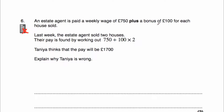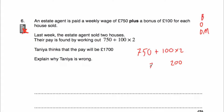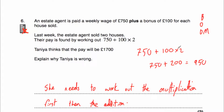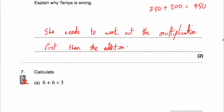Question 6: an estate agent is paid a weekly wage of £750 plus a bonus of £100 for each house sold. Last week the agent sold two houses, so pay is 750 plus 100 multiplied by 2. Tanya thinks the pay is £1700 — explain why she's wrong. We must do the multiplication first: 100 times 2 is 200. Then 750 plus 200 is £950. Tanya did 750 plus 100 first (850) then multiplied by 2 to get 1700, which is incorrect. She needed to do the multiplication before the addition.